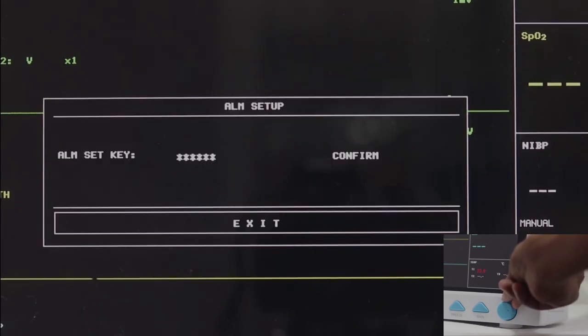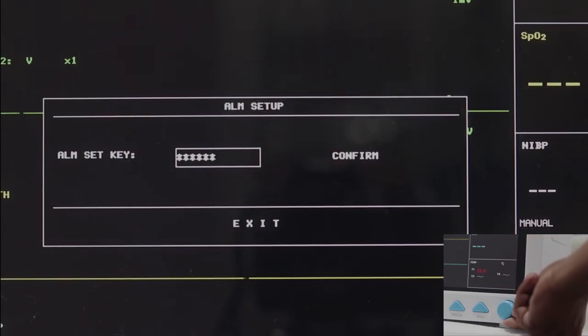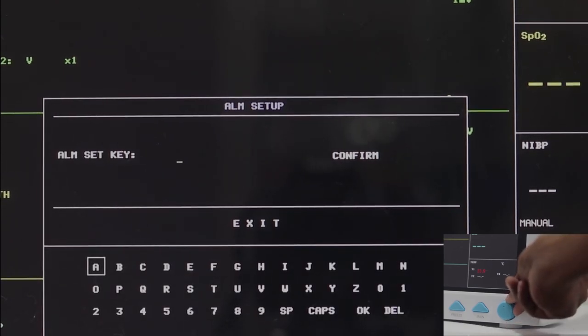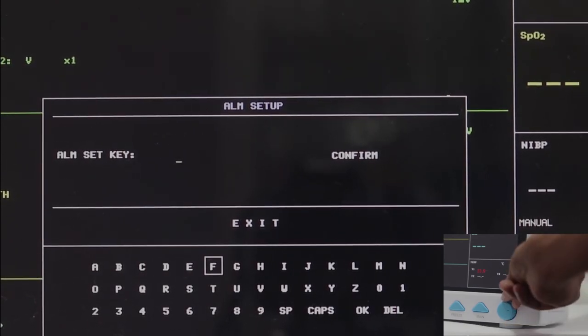Alarm Setup: You have to enter a password every time you want to set up an alarm. The password is 70808.